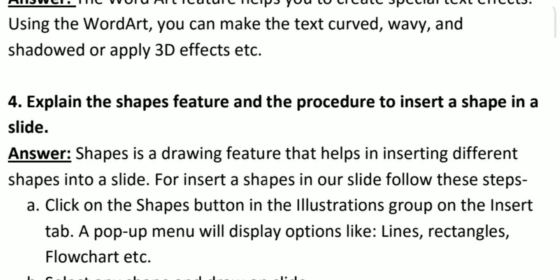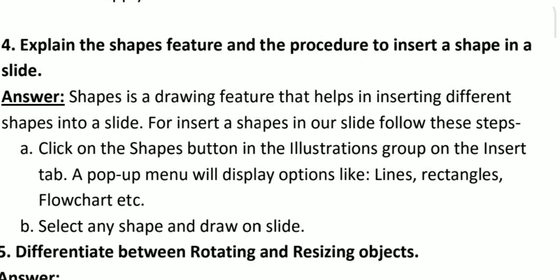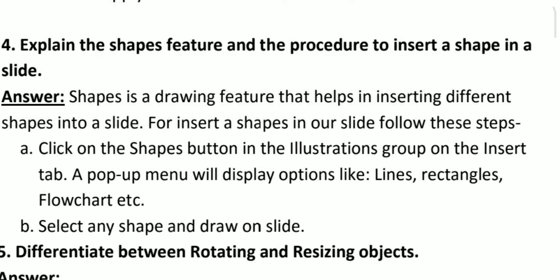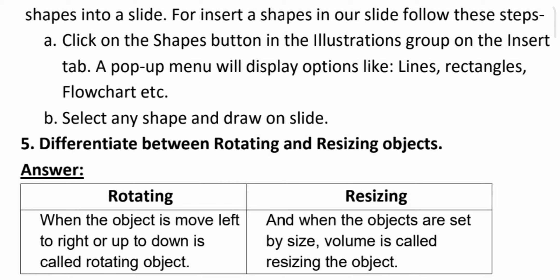Question number 4. Explain the shape feature and the procedure to insert a shape in a slide. Answer. Shapes is a drawing feature that helps in inserting different shapes into a slide. For insert a shape in our slide, follow these steps. Click on the shape button in the illustration group on the insert tab. A pop-up menu will display options like line, rectangle, flowchart, etc. Now B. Select any shape and draw on slide.